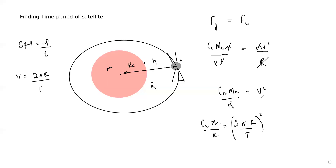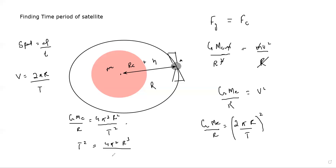When we solve, v is squared, so on the left-hand side we have G times the mass of Earth divided by radius, equal to 4π² times the distance squared divided by T². Solving this equation, T² equals 4π²r³ divided by GM_E. The factors 4, π², G, and mass of Earth are all constants, so this whole factor is constant.